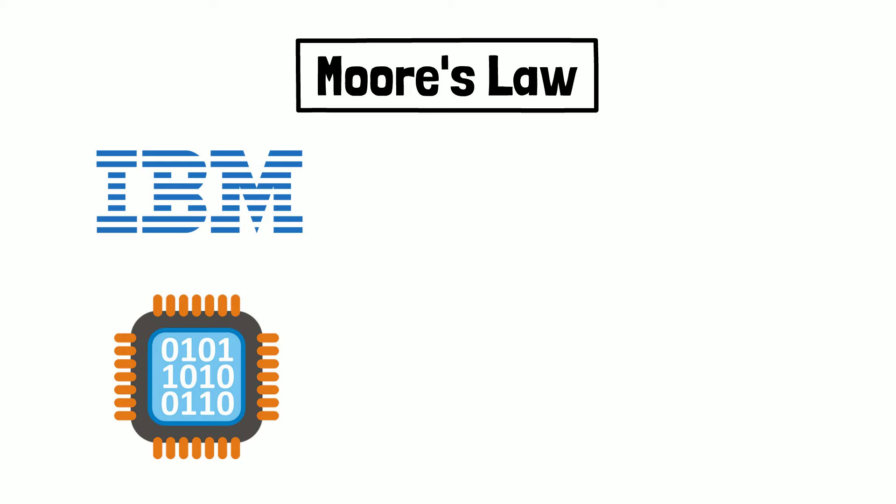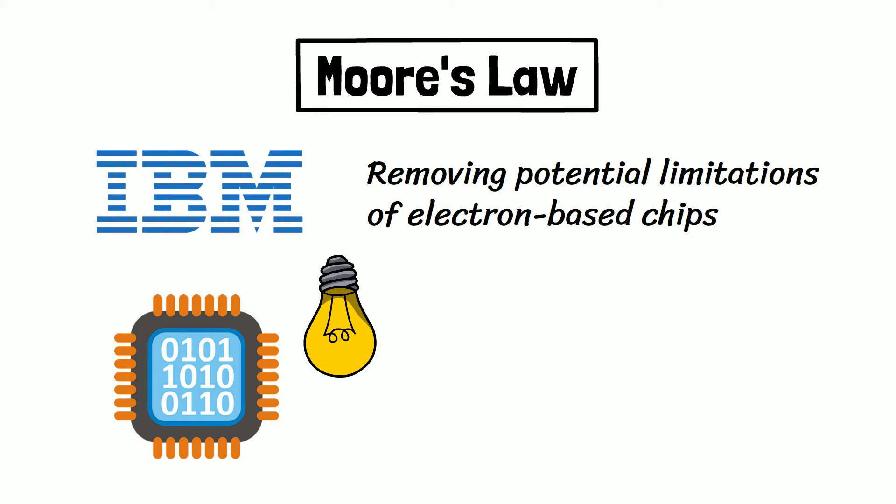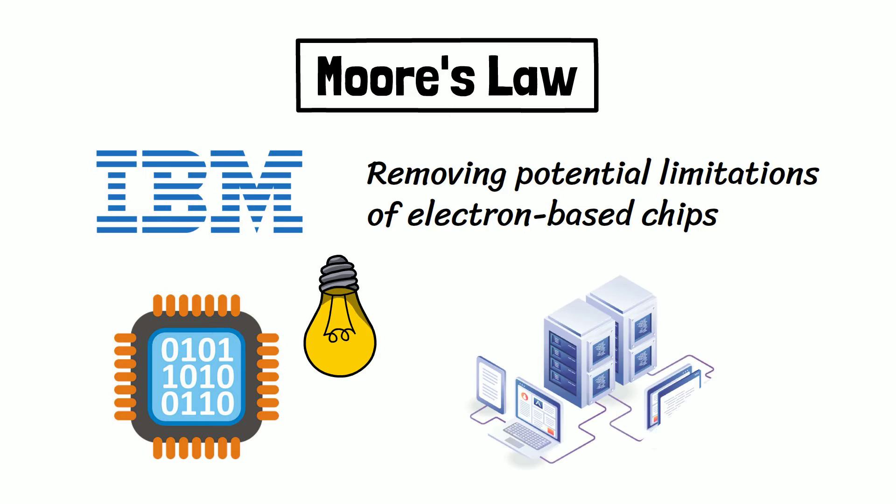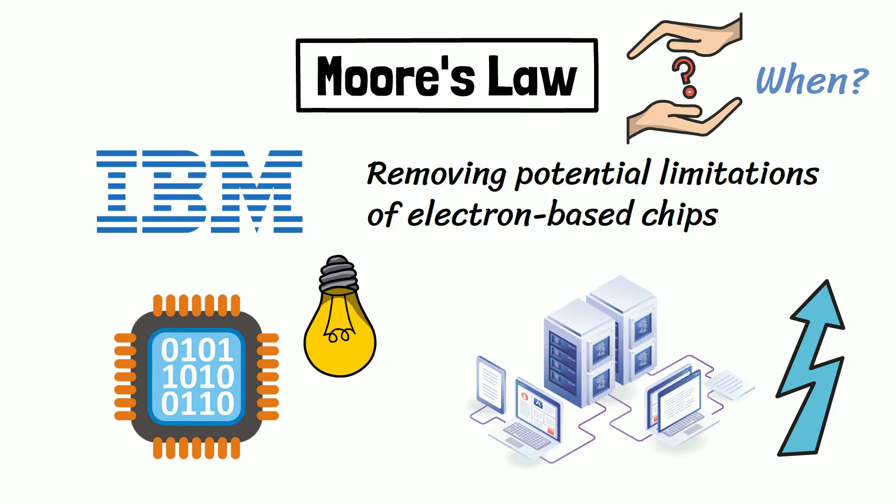IBM has recently developed microchips that run on light, removing potential limitations of electron-based chips. They predict that this technology will increase the speed of supercomputers a thousandfold over the next eight years. With such breakthroughs and continued progress, it seems to be a question of when the average laptop will calculate faster than our brains, not whether it will.